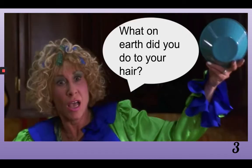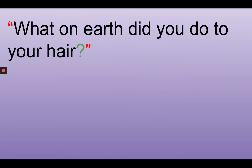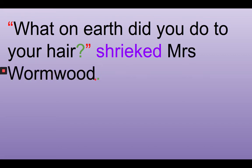In this scene, Mrs. Wormwood turns around and sees that Mr. Wormwood has dyed his hair bleach blonde, or silver as it is in the book. She's spun around and she's completely shocked, and she says, what on earth did you do to your hair? And we want to turn that into a sentence using speech marks. I've copied out everything that Mrs. Wormwood has said in the speech bubble, including the question mark. The next step is to add in the opening speech mark at the beginning and the closing speech mark at the end. I've decided to use the word shrieked. What on earth did you do to your hair? Shrieked Mrs. Wormwood. And then you need your full stop at the end.